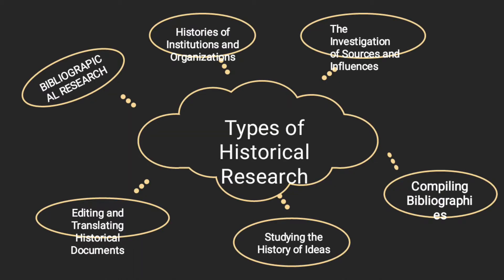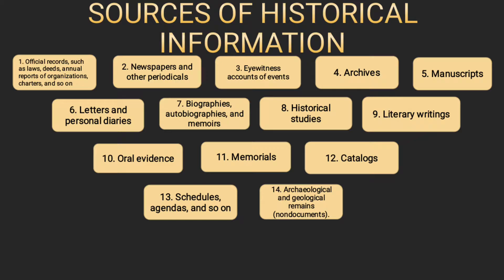Types of Historical Research. Six different types of historical research include documentary study, biographical research, histories of institutions and organizations, the investigation of sources and influences, editing and translating historical documents, studying the history of ideas, and compiling official records such as laws, deeds, annual reports of organizations, charters, and so on.